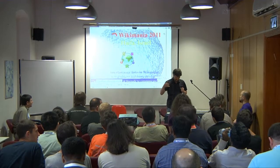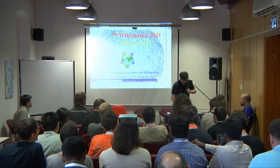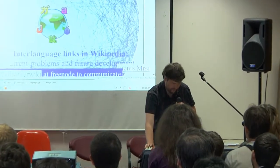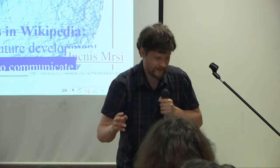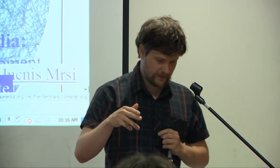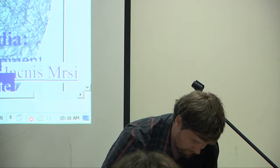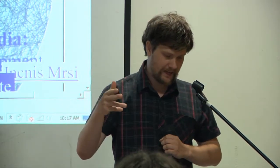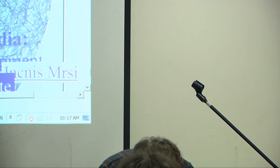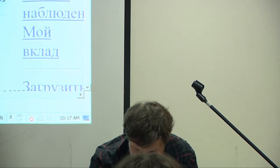I have a short amount of time, maybe not enough to discuss my full presentation on how to improve the current system of interlanguage links, which are colloquially referred to as inter-wiki, though the more correct term is interlanguage links in Wikipedia. I propose some approaches. These are only approaches, not ready-to-use solutions. This approach should, of course, be discussed.